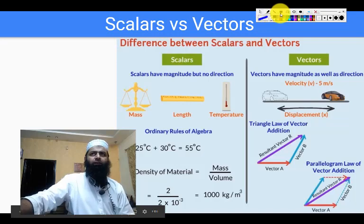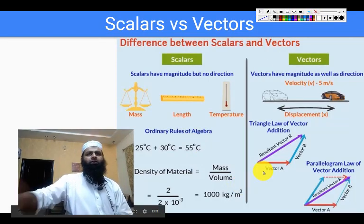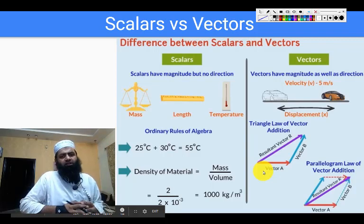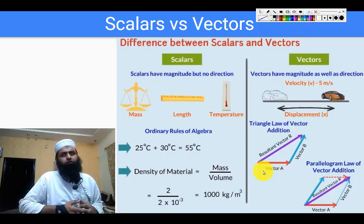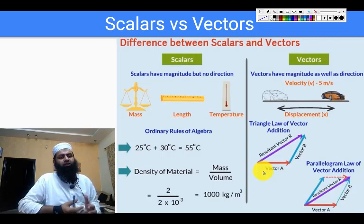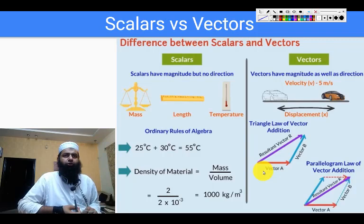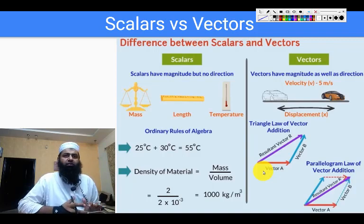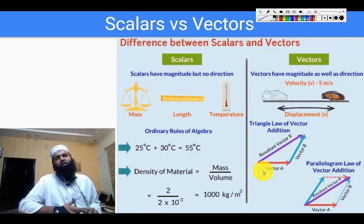Let's start with the very simple thing — the difference between a scalar and a vector. You might have already learnt these things before this course, so just to reiterate: a scalar quantity is any quantity which can be completely described by just a number, just a magnitude. However, a vector is a quantity which needs both a magnitude and a direction for its representation. That's the basic difference between a scalar and a vector.